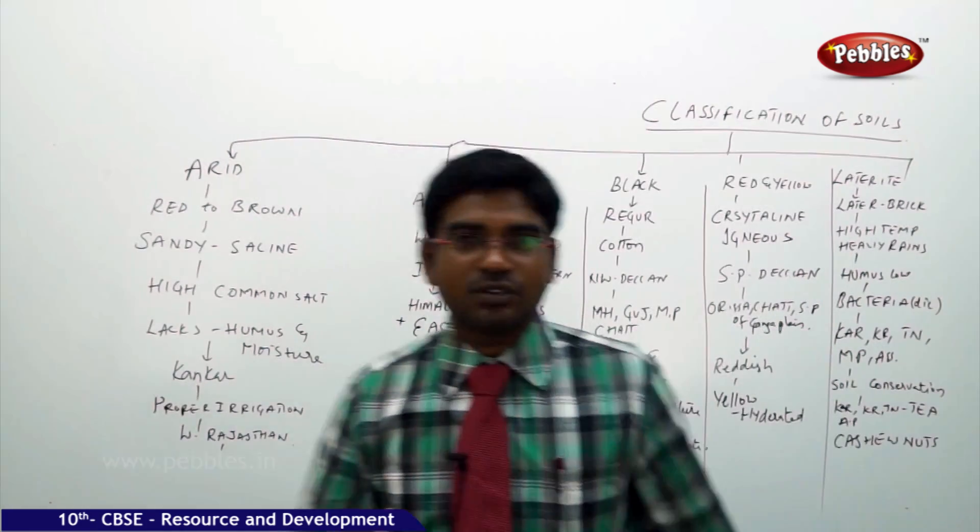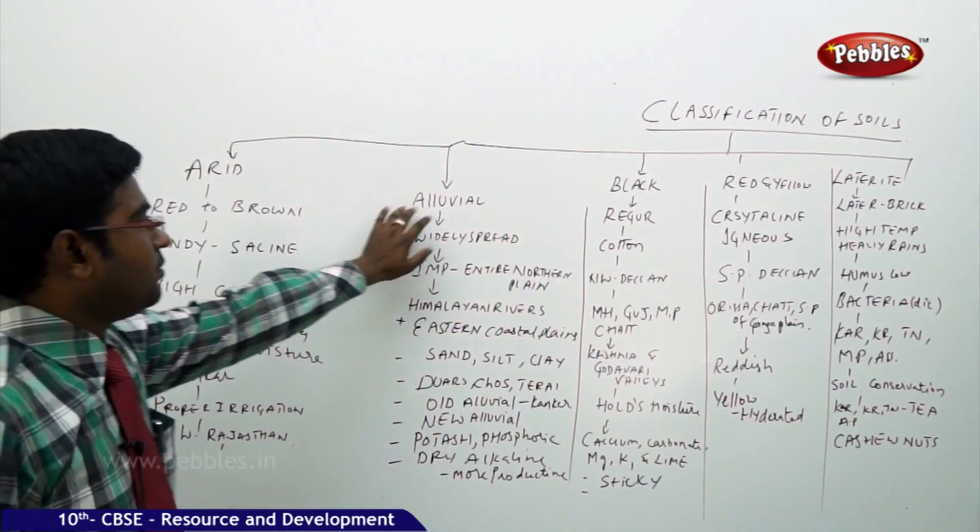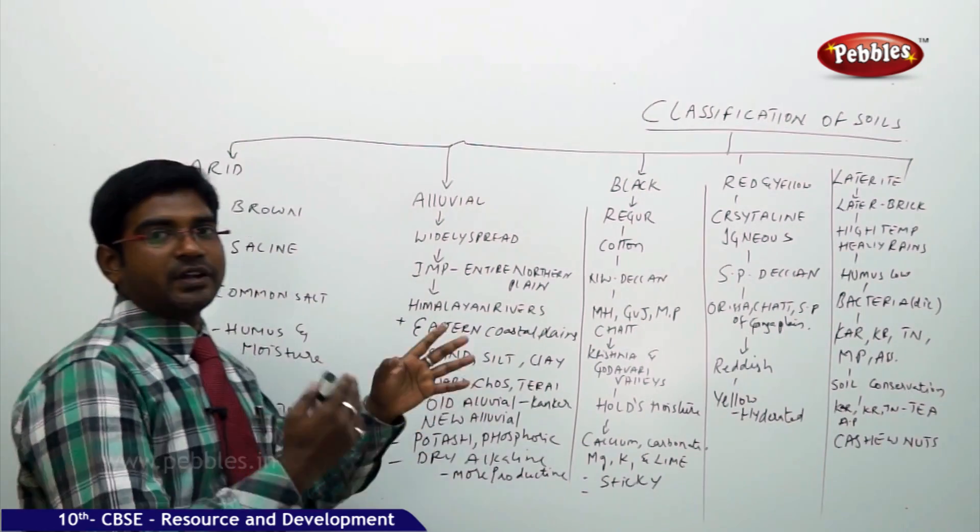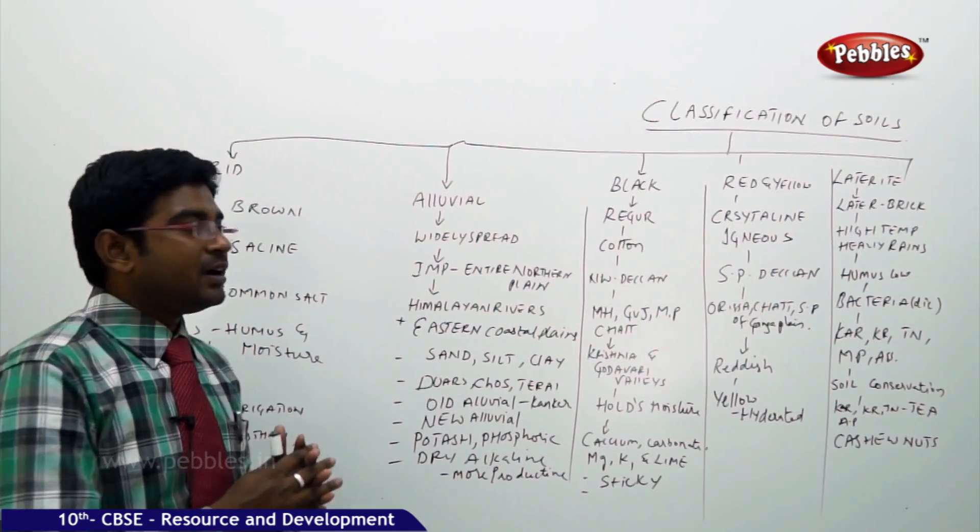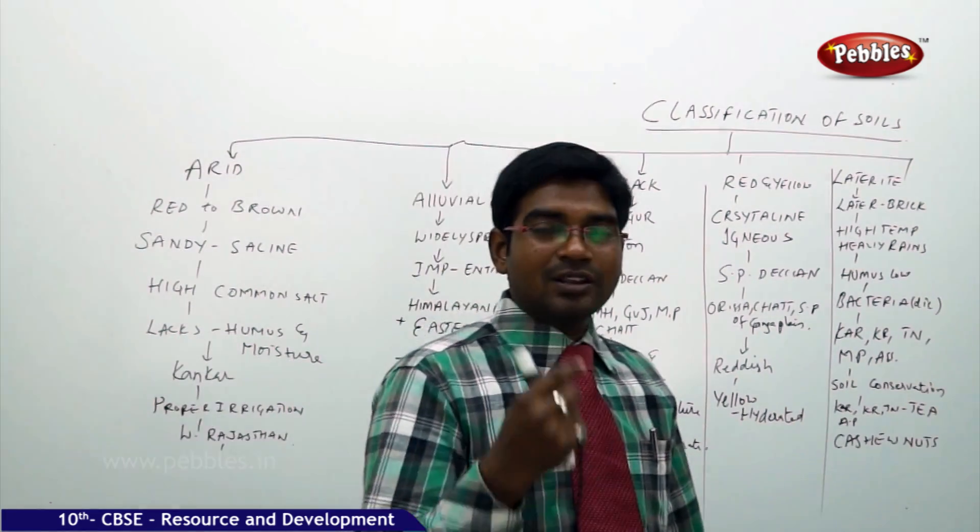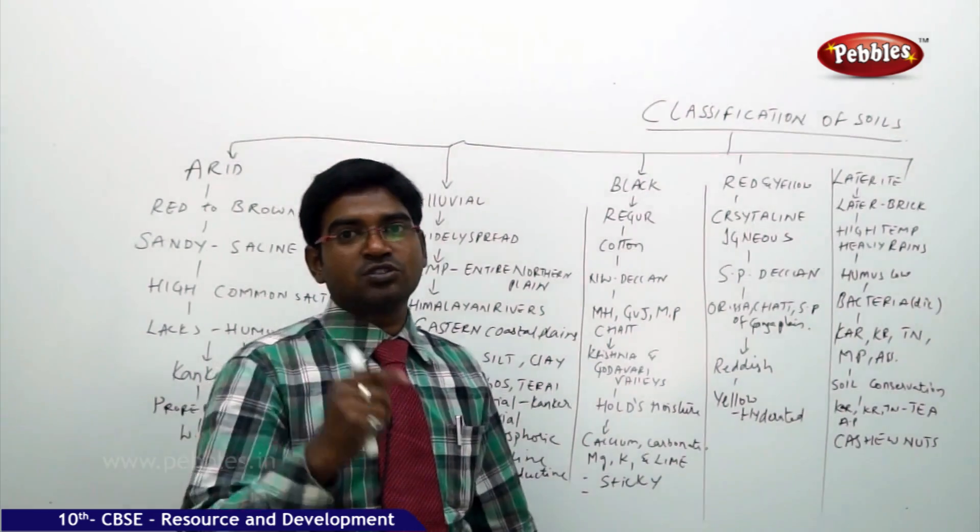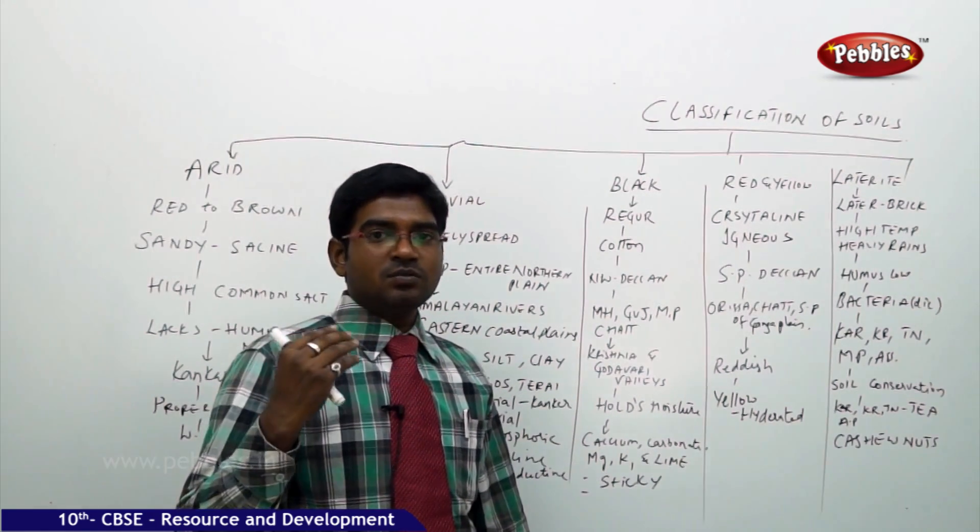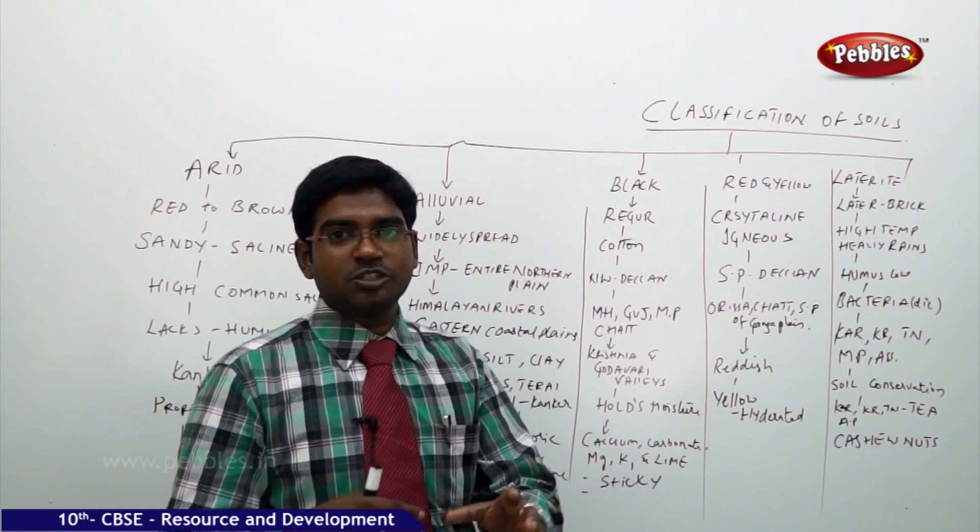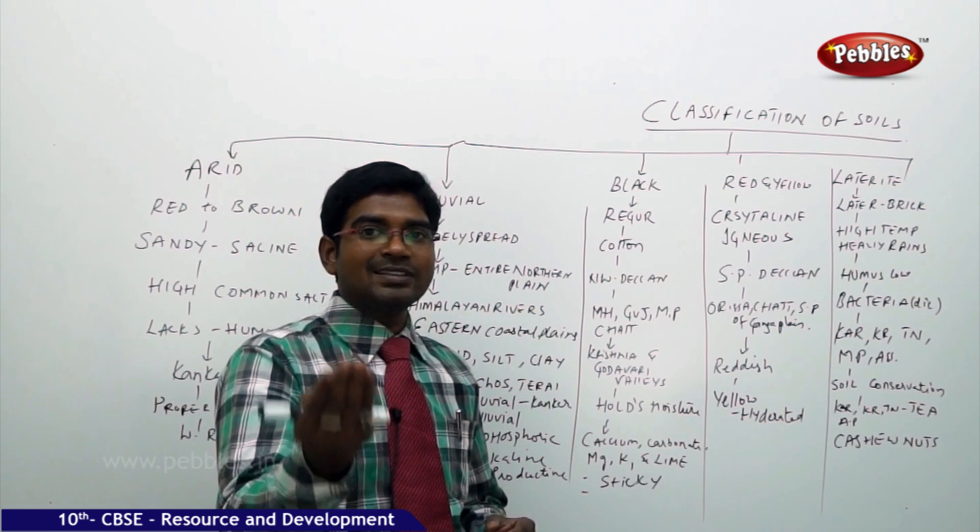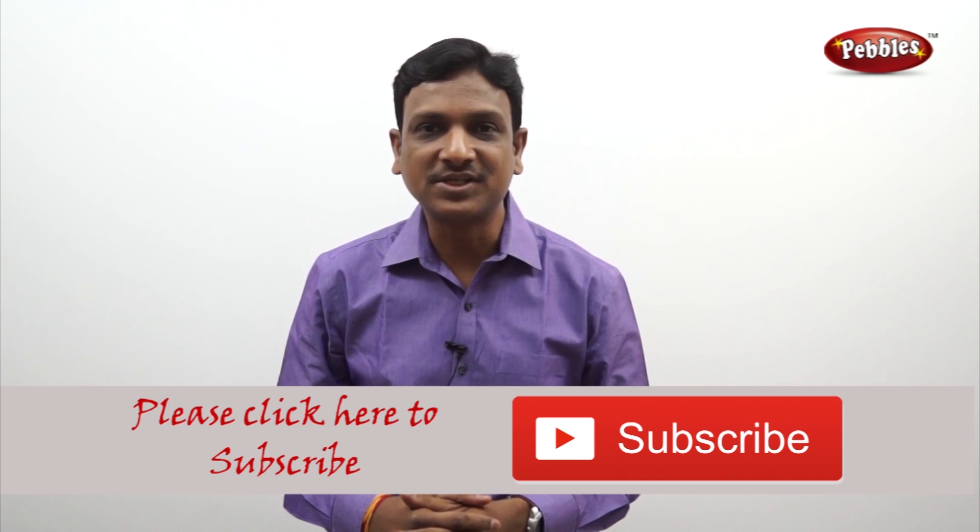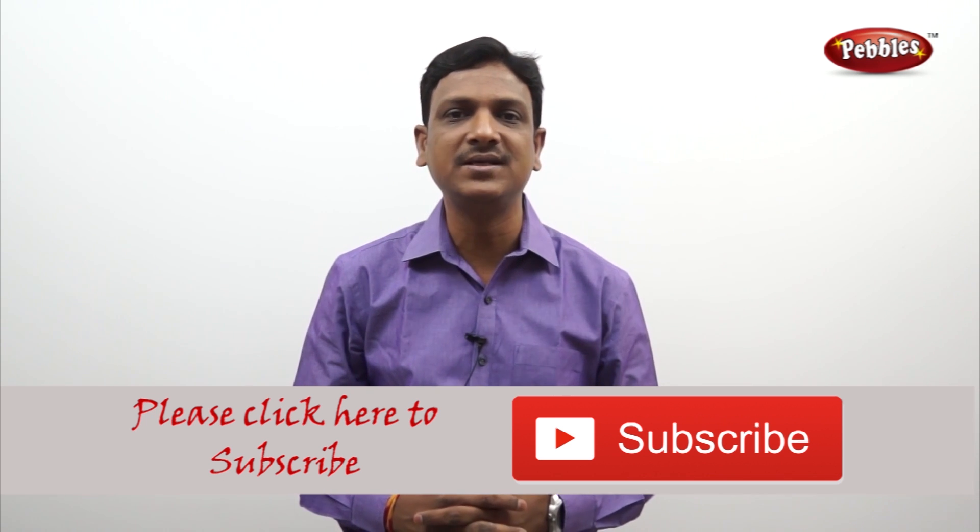The five major categories of soils are arid, alluvial, black, red and yellow, laterite. They all have different different colors, different different textures, different different chemicals available and they are found in different different parts of the country. But all together these all come under the category of soil as a resource. Now, we shall further discuss about what is soil explosion or erosion and soil conservation methods. If you like this video, please give a thumbs up. Please subscribe to our channel to get more videos on CBSE syllabus.